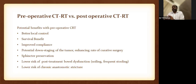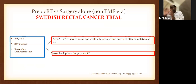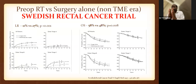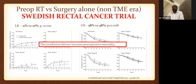The Swedish rectal cancer trial, published in 1997, was path-changing: short course RT — five fractions of 5 Gy — followed by surgery within one week, versus upfront surgery with no RT. It showed two things: decreased local recurrence, and — uniquely among trials — an overall survival benefit that was statistically significant even on prolonged follow-up. Importantly, irradiation did not increase post-operative mortality.